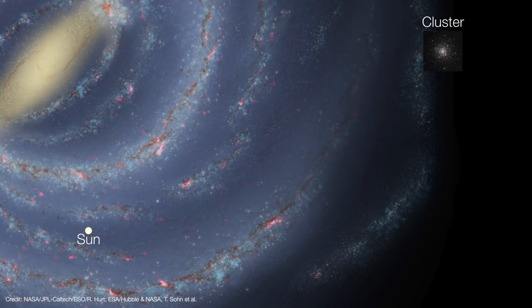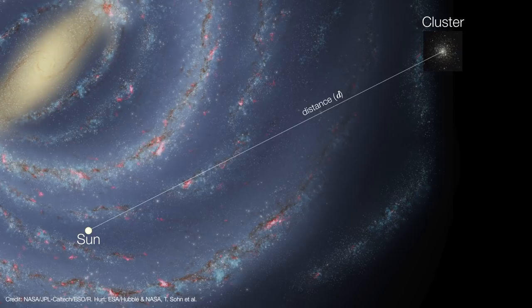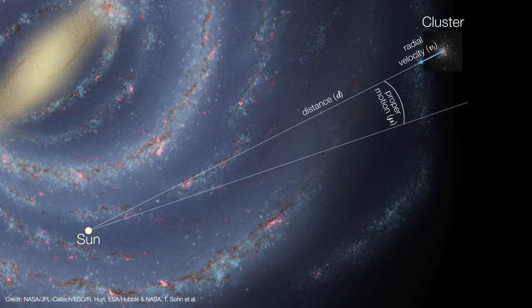In order to determine a cluster's true velocity, we need to know three things: its distance from the sun, its velocity along our line of sight called radial velocity, and its sideways motion called proper motion.